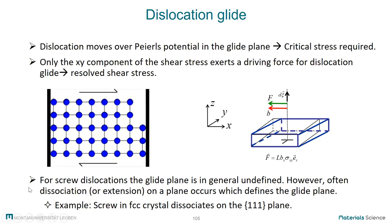There is one specific thing about glide planes for screw dislocations, which in principle have no defined glide plane. However, sometimes due to the crystal structure one sees dissociation or extension of the dislocation on one plane, which can then define the glide plane. Although the cross product of Burgers vector and dislocation line orientation does not define the plane, due to the crystallographic effect of dissociation one again obtains a glide plane. This is the case for screw dislocations in FCC crystals, where dissociation occurs on the {111} plane, so the screw dislocation in FCC also has a defined glide plane.